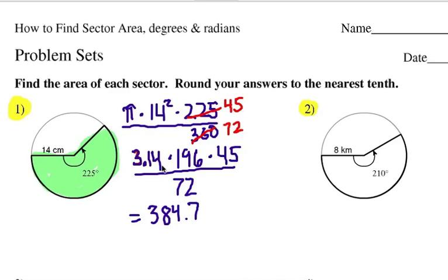Now that's after rounding, and I'm only using two decimal places for pi. But that would be centimeters, and we're talking about area, so it's centimeters squared. It's always going to be square units. All right, number two.